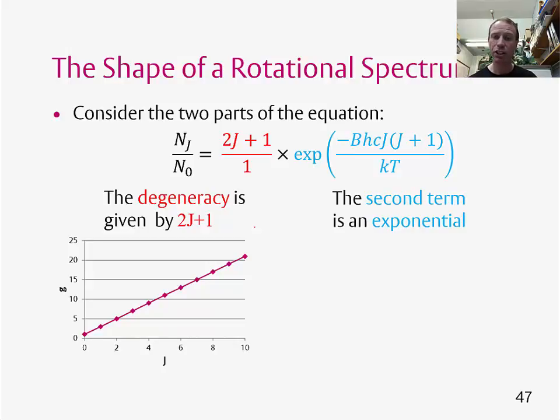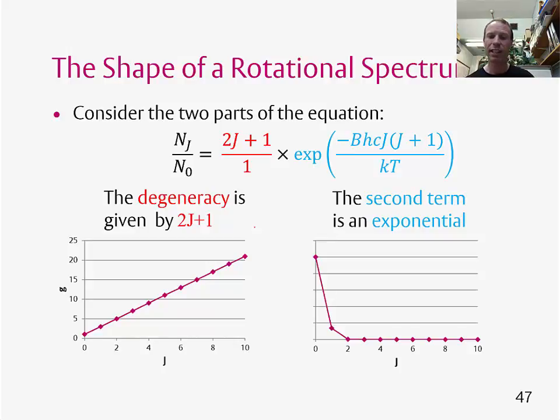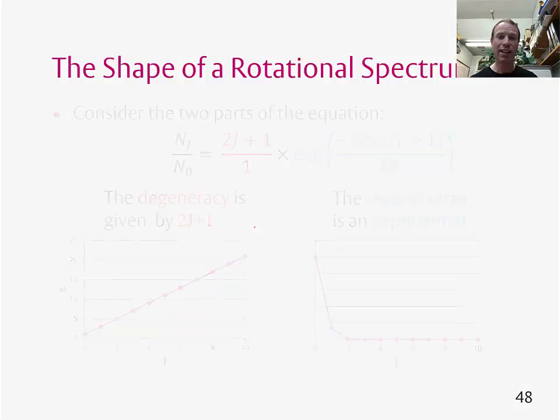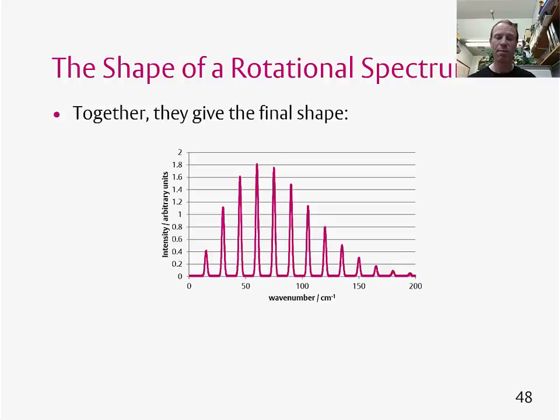The other term is an exponential. It has a negative sign, so it will look something like this. So it decreases rapidly as J increases. So what do these look like if we put them together? So it gives us a shape which looks like something like this. And here we can see that we've superimposed the transitions, so the various lines which occur in the spectrum, with this final shape. So this is what a rotational spectrum would look like if we measured one, taking into account the degeneracy and the populations of the state.